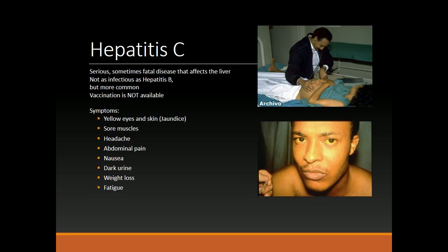Hepatitis C is a serious, sometimes fatal disease that affects the liver. It is not as infectious as Hepatitis B, but is more common. Vaccination is not available. Symptoms include: yellow eyes and skin (jaundice), sore muscles, headache, abdominal pain, nausea, dark urine, weight loss, and fatigue.